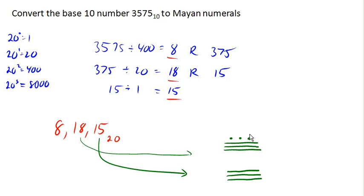And then finally our 400s place will go on top. 400s place goes on top and that's 8. 8 would be 5, 6, 7, 8.